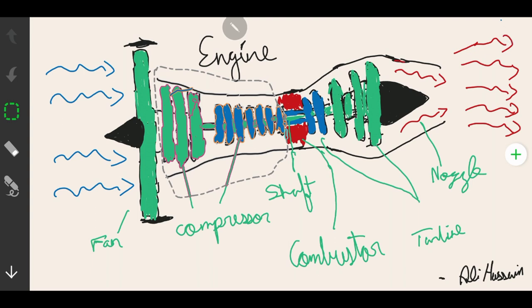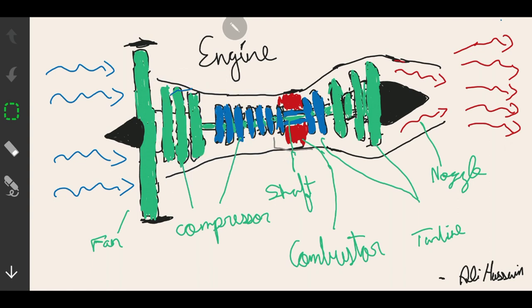The combustor is where air is mixed with fuel and ignited. There are many nozzles spraying fuel into the airstream. The mixture of air and fuel produces fire, resulting in high temperature along with high energy flow.